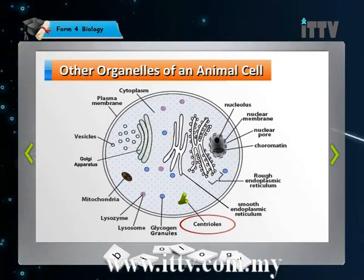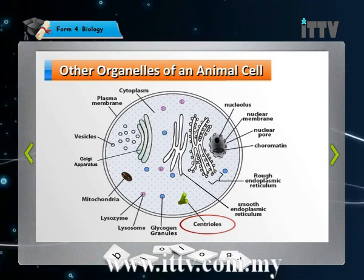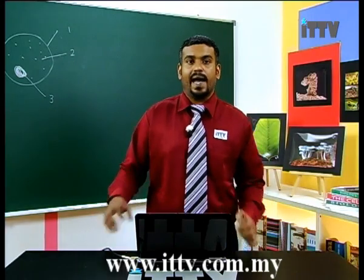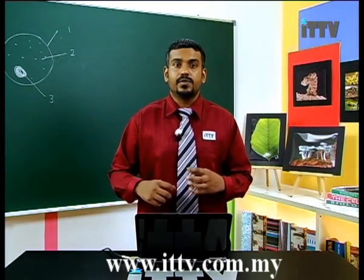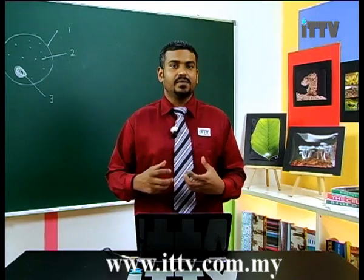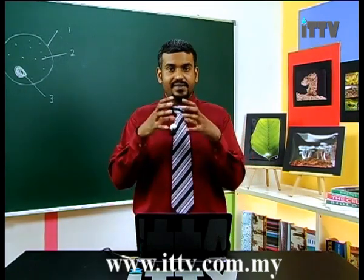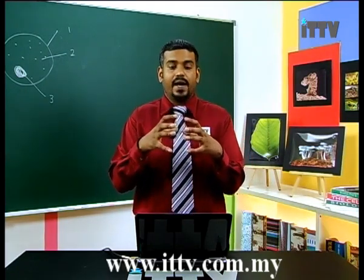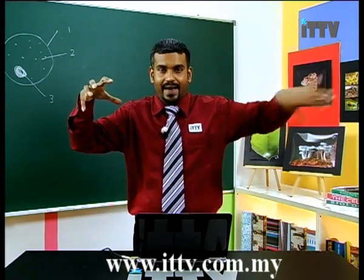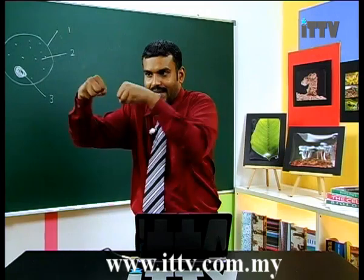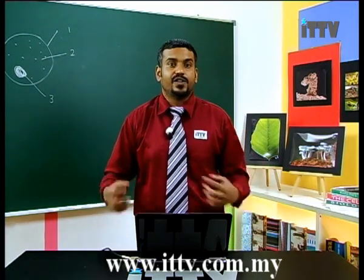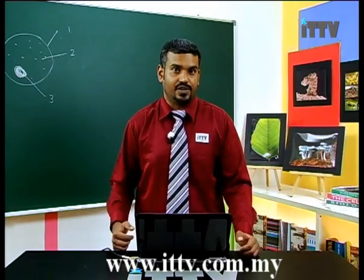Let's take a look at something called the centrioles. The centrioles are actually fibers and these fibers help the cell to carry out cell division. What is cell division? A cell will divide into two cells and they will grow; then each cell divides again. That is how cells multiply. In order for that process to happen in an animal cell, you need centrioles.